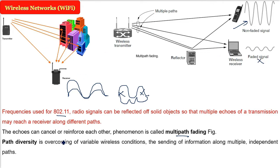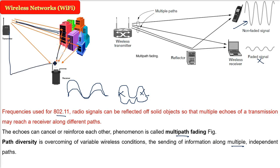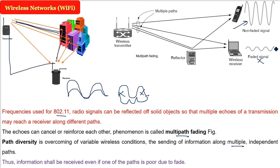The solution to multipath fading is path diversity. This was developed to overcome variable wireless conditions. By taking multiple independent paths to send information — not just one direction but different paths — the information can still be received even if one of the paths gives a faded signal.